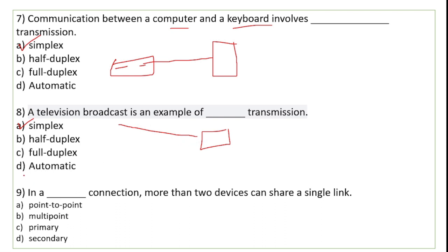In a dash connection, more than two devices can share a single link. Ek se zyada devices single link ko share karte hain — sender data send bhi karta hai aur receive bhi karta hai, aur receiver bhi same karta hai. Is type ke connection ko hum bolte hain multipoint connection, jahan do ya zyada devices ek single link share karte hain.